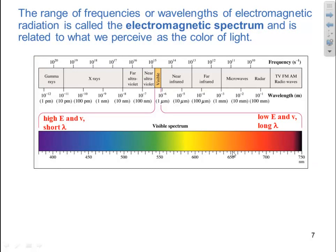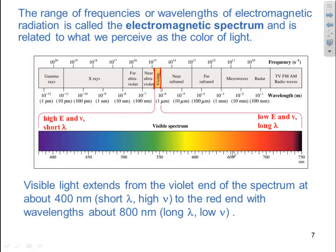The range of frequencies or wavelengths of electromagnetic radiation is called the electromagnetic spectrum and is related to what we perceive as the color of light. That would be in the visible range. The visible range is what we see as the colors of light. If we expand that visible range, this entire spectrum is in that visible range.